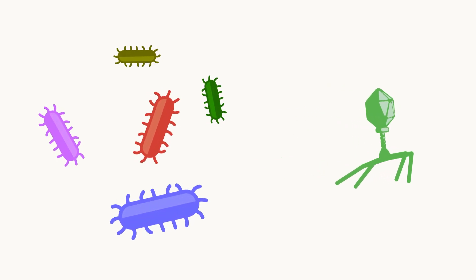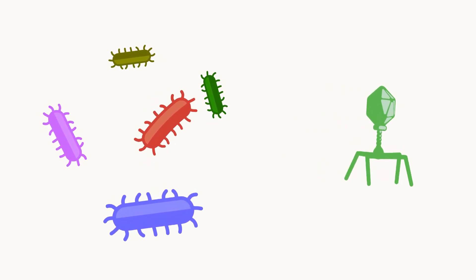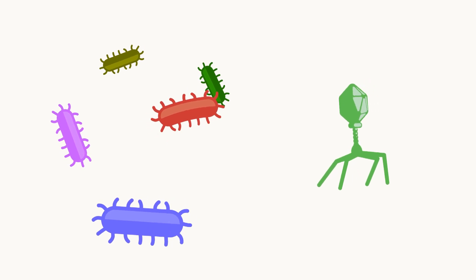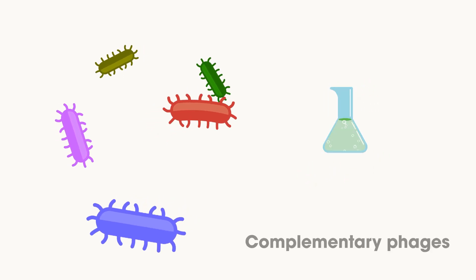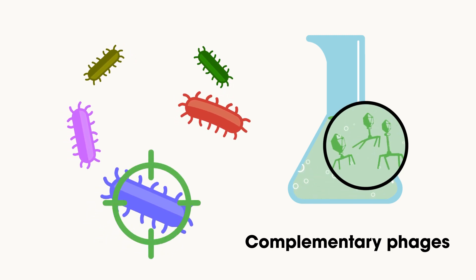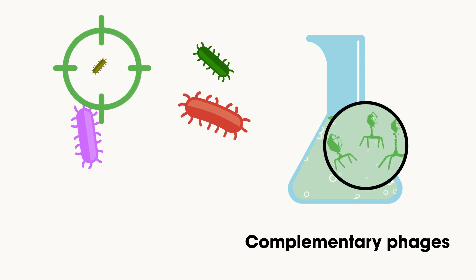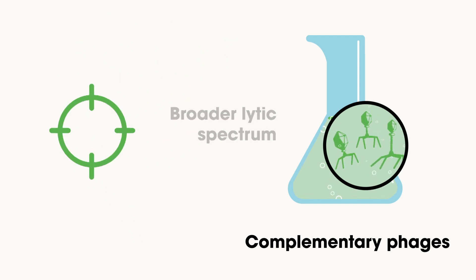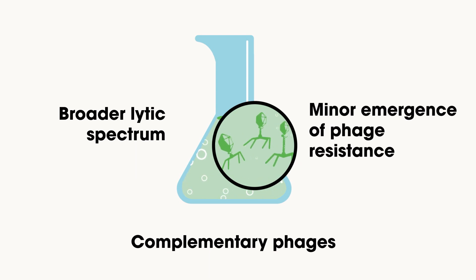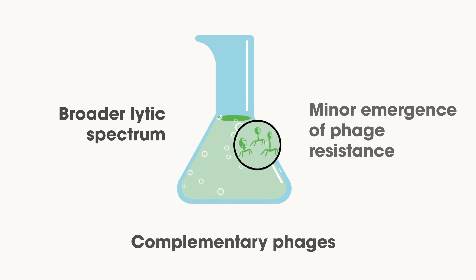As biocontrol agents, phages should infect as many target bacteria as possible. As they are very specific, the best strategy to achieve the broadest lytic spectrum is the formulation of phage cocktails with complementary phages, targeting diverse strains of different origins, antibiotic resistance or even different species. Moreover, cocktails help to reduce the emergence of phage-resistant bacteria.